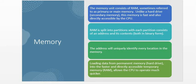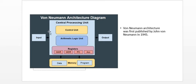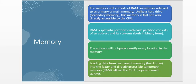Now we've looked at the Control Unit, the Arithmetic and Logic Unit, and the registers. The other item to look at is computer memory. When talking about memory in reference to the CPU, we are mainly interested in the RAM — or primary memory. A computer with more RAM performs faster than a computer with less RAM.